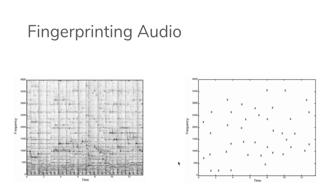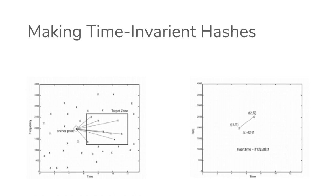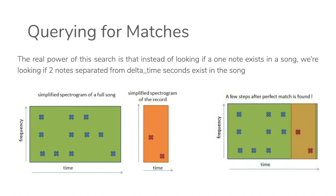The next step is making time-invariant hashes. This is used because you can search for a song starting from the middle — it's not necessary to start from the beginning. The algorithm calculates the frequency at one key point, the frequency at the next key point, and the time difference (delta time) between those two points. It hashes the notes at those two points along with the delta time.